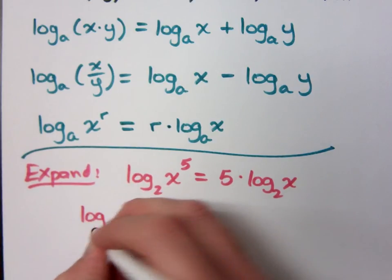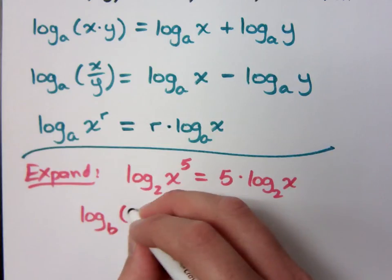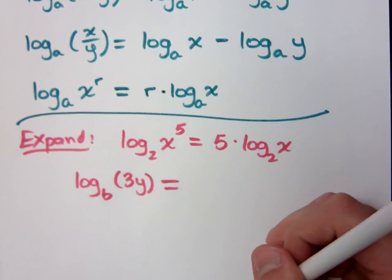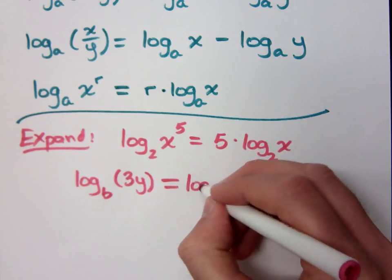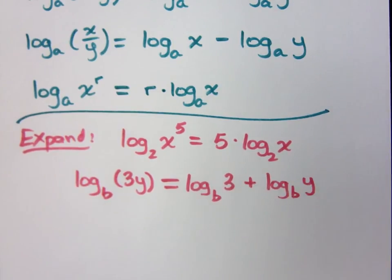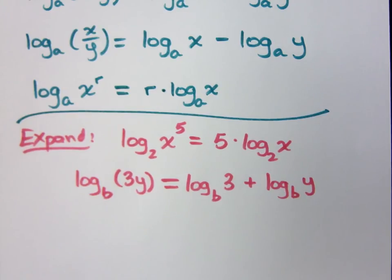If I have log to the base b of 3y, how can I rewrite that? Log base b of 3 plus log base b of y — just separate those. You may be wondering why you'd even separate these. Back in the day, when you had complicated logarithmic expressions to evaluate, you could break them into simpler parts. For example, knowing that 81 is 3 to the 4th helps because there are log tables you can use to do smaller computations.